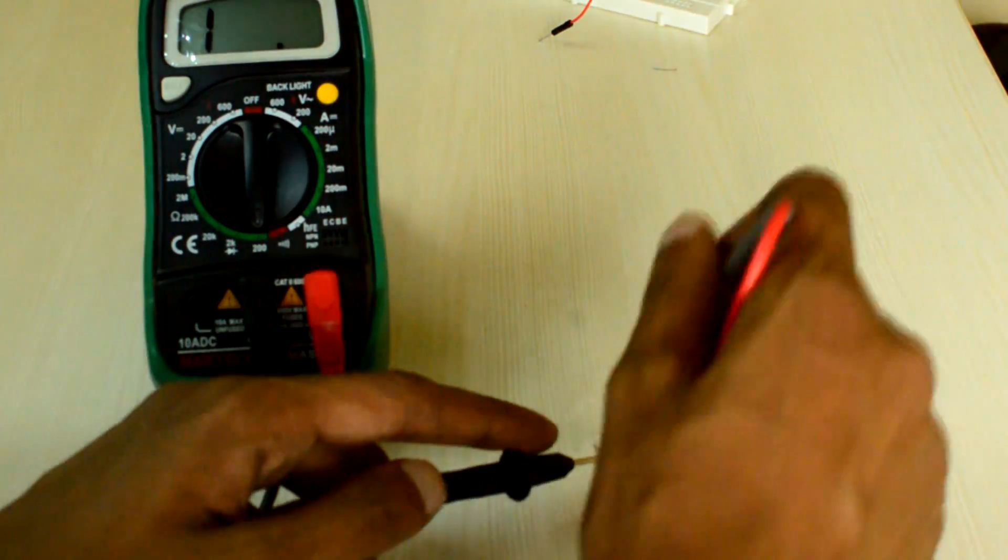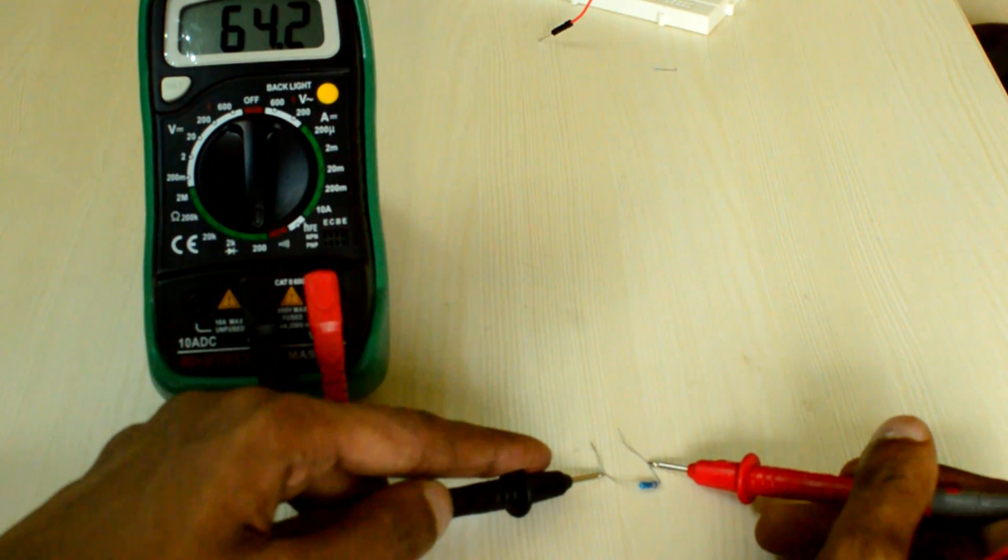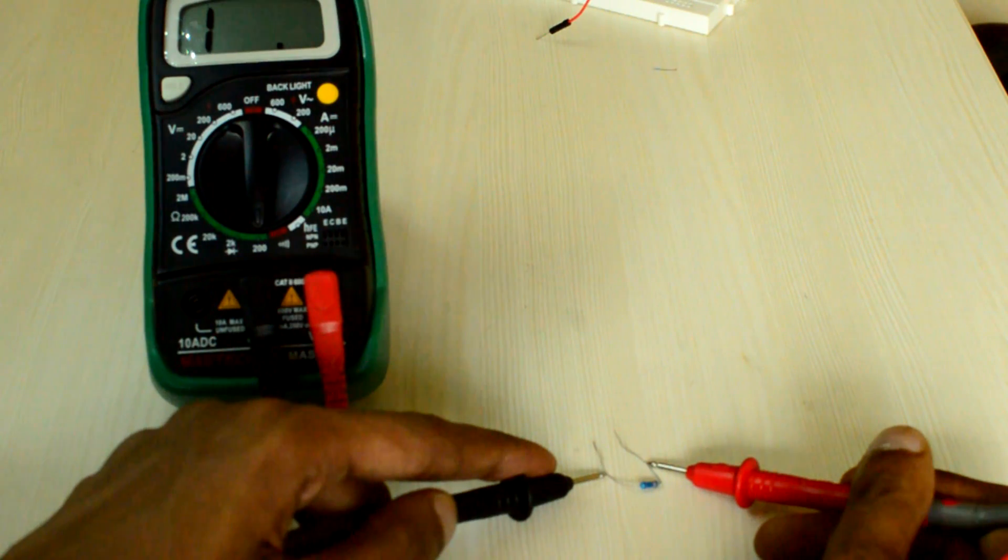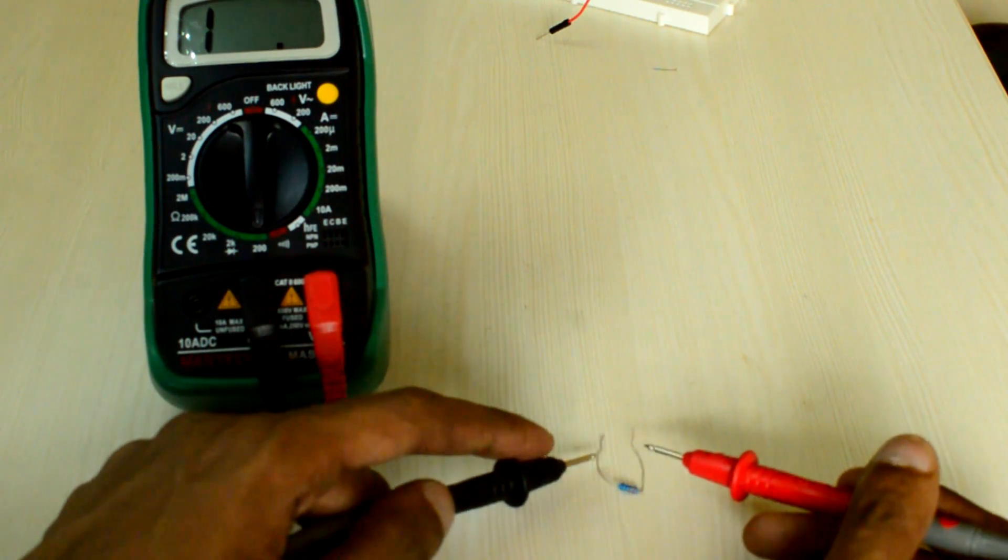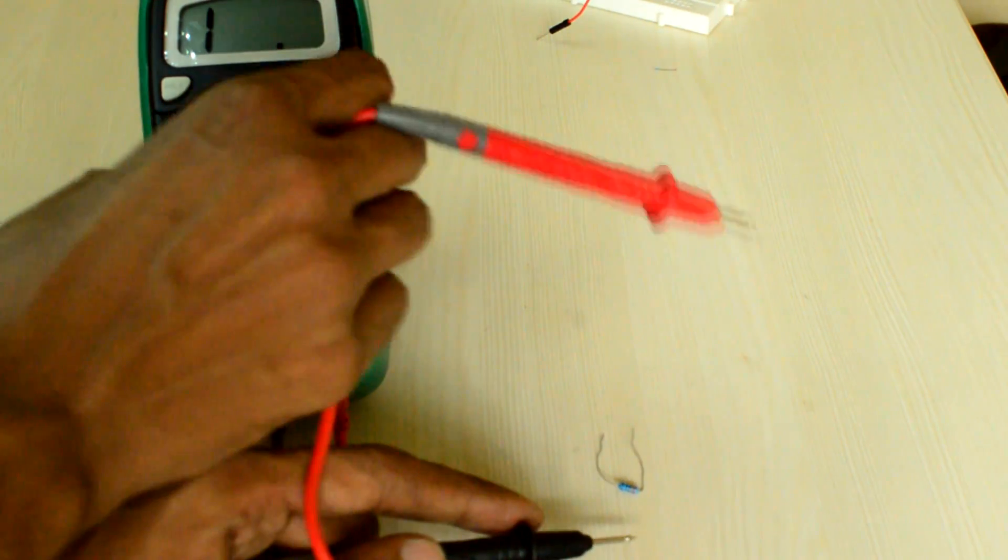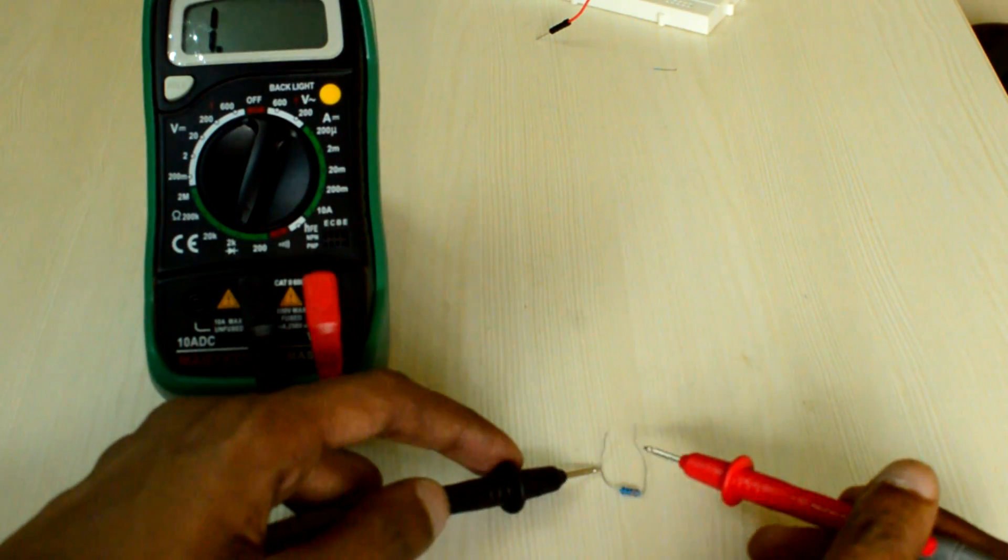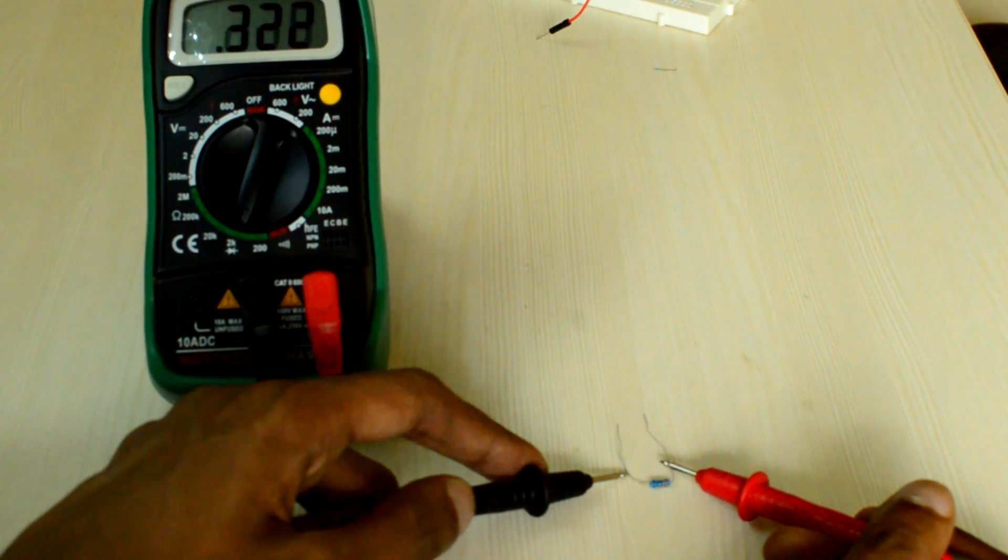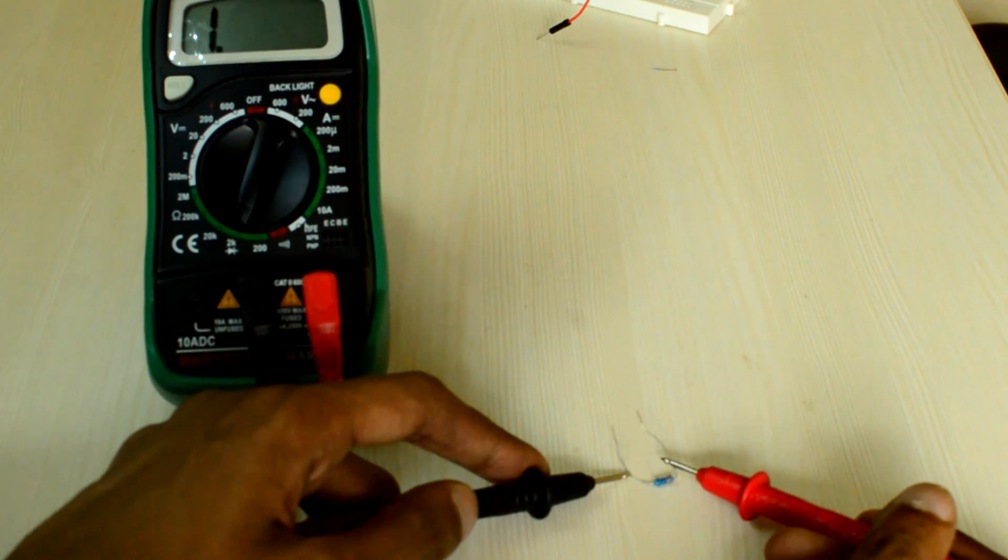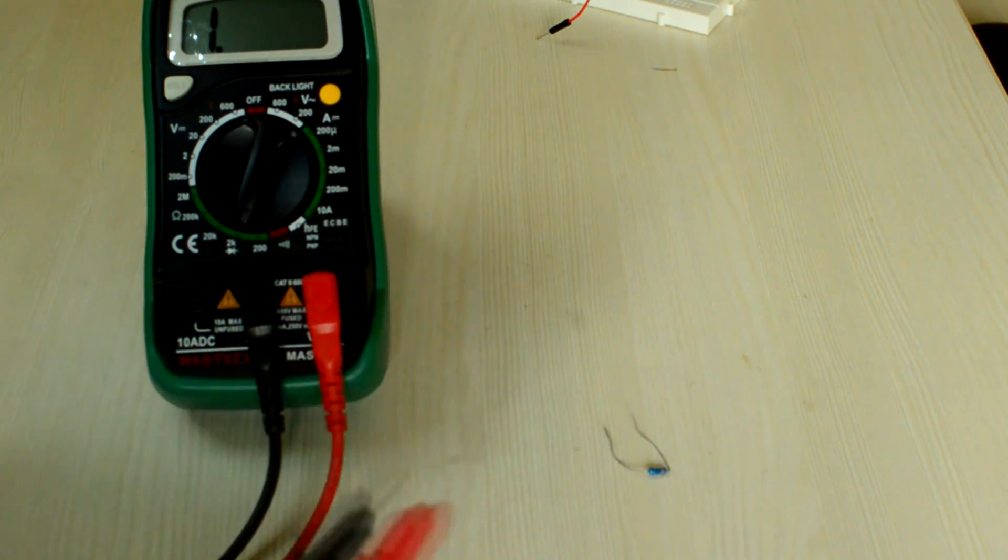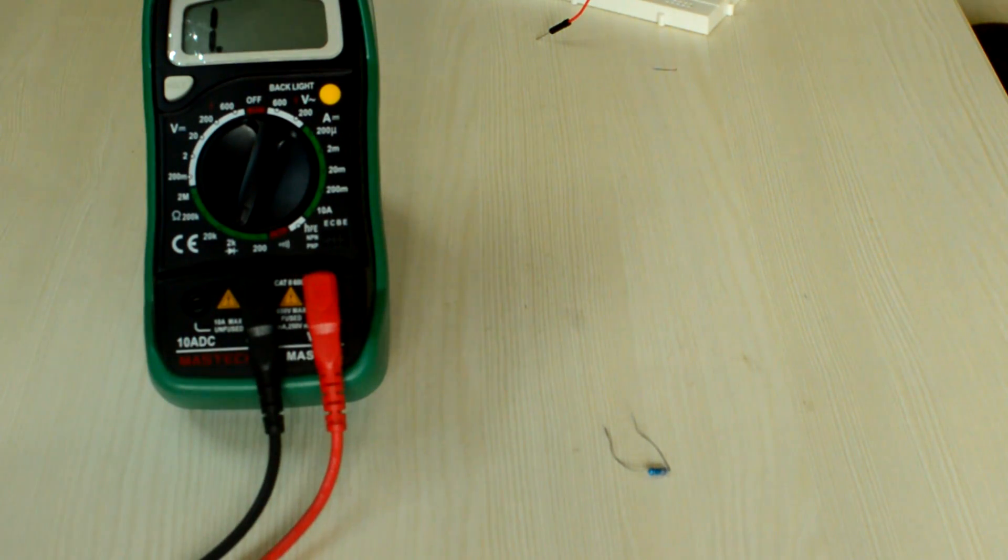To measure the resistance, connect both terminals of DMM across the resistor. You can see that the DMM shows 1 which means it is out of range. That means the resistance is more than 200 ohm. Let's switch the dial to the 2k mode. Let's see the resistance now. It says 0.329 kilo ohm which means it is 329 ohm which is very close to the actual 330 ohm value. Hence the measurement was pretty accurate.